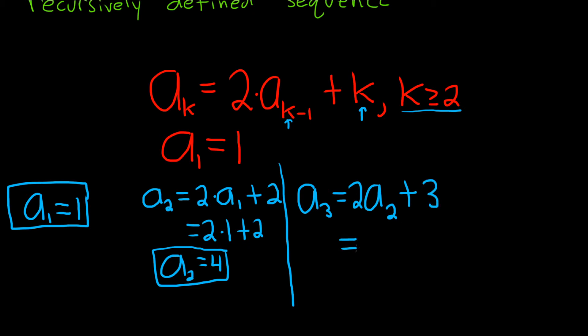That equals 2 times a sub 2, which is 4, so this is 2 times 4 plus 3. 2 times 4 is 8, so we get 8 plus 3, which is 11. So a sub 3 equals 11.